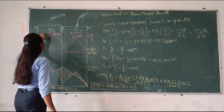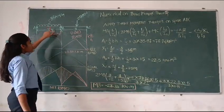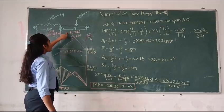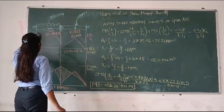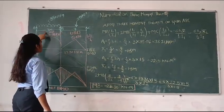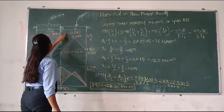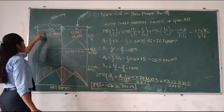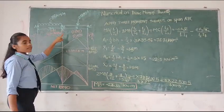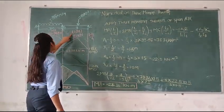Span AB is 3m with UDL of 35 kg per meter and span BC is 3m with UDL of 15 kg per meter. The moment of inertia for span AB is 2I and span BC is I.